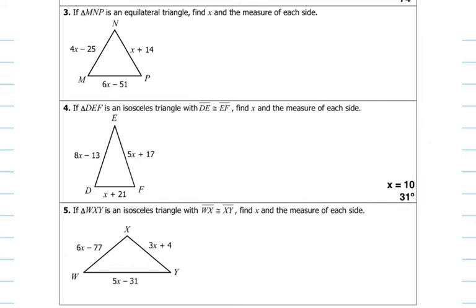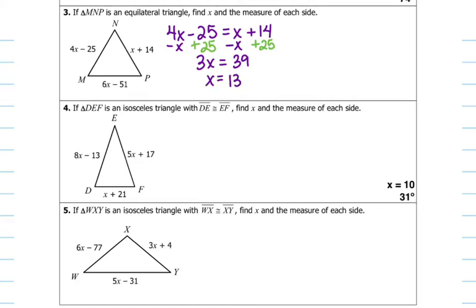Number three: if triangle MNP is an equilateral triangle, find X and the measure of each side. Since it's equilateral, all three sides are the same. We're going to set two sides that share the same variable equal to each other. Subtract X and add 25 to the other side, then divide by three and get X equals 13. Then plug 13 back into any of the expressions — the easiest one gives 13 plus 14, which is 27. So the side length is 27.